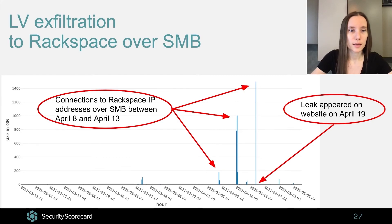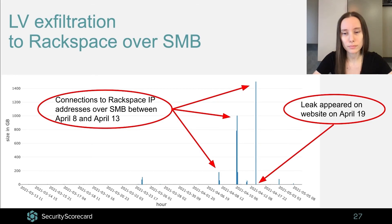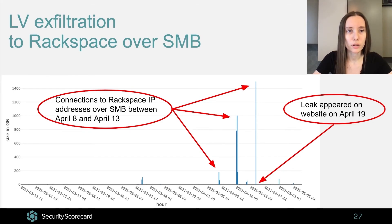The second use case is a potential data exfiltration performed by the LV ransomware to the Rackspace cloud over SMB. The image illustrates the number of gigabytes exchanged hourly between an IP address belonging to a company infected by LV and other IP addresses over SMB. We can observe three spikes between April 8th and April 13th, showing communication between the infected company's IP address and various IP addresses associated with Rackspace cloud. Six days after the last spike, on April 19th, data belonging to this company was leaked.